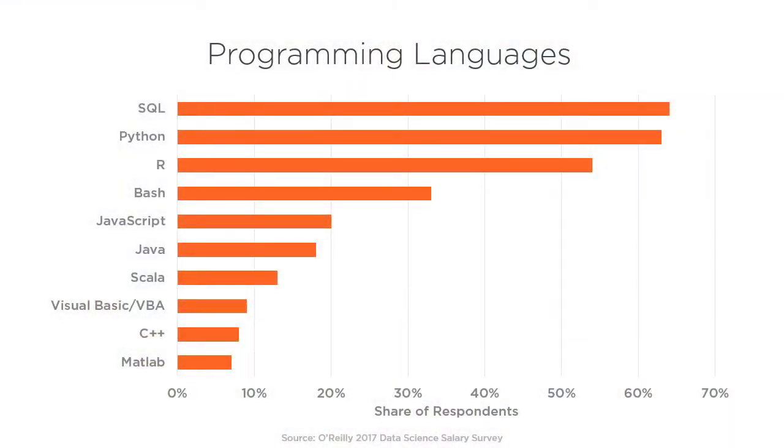What tools are used to perform data science? For programming languages, the most popular language is SQL, or Structured Query Language. SQL is a very important language in data science because of how much time data scientists spend exploring, transforming, and cleaning data.